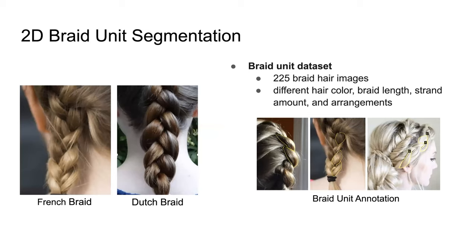Although a braid is composed of several hair strands, those hair strands are only partially visible in braid images because they overlap each other, so the appearance of the braid is made of a group of braid units. Variance in arrangement, size, shape, orientation, and locations of the braid units lead to different braid hair styles. As the basic element of the braid hairstyle, the braid unit provides important information about the braid structure, so our braid reconstruction is based on braid unit identification.